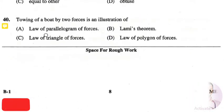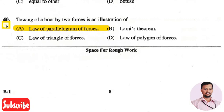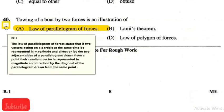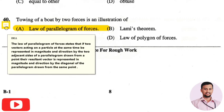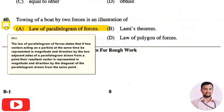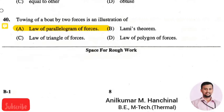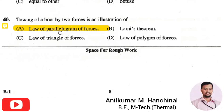The last question in this applied science section is: the towing of a boat by two forces is an illustration of — the right answer is option one: law of parallelogram of forces. The law states that if two vectors acting on a particle at the same time are represented in magnitude and direction by two adjacent sides of a parallelogram drawn from a point, the resultant vector is represented by the diagonal of that parallelogram drawn from the same point.